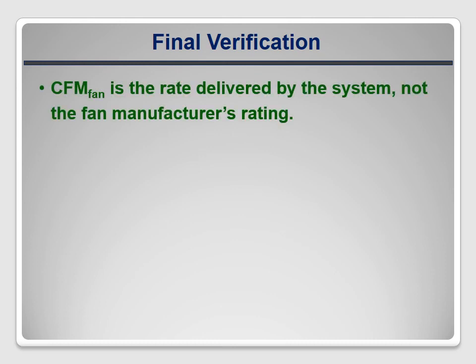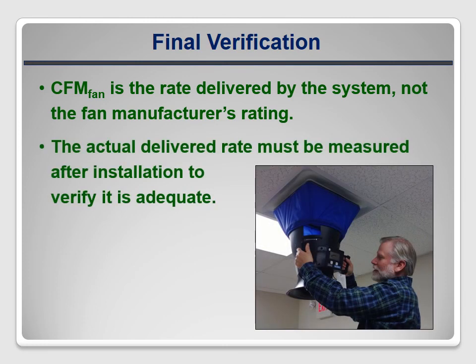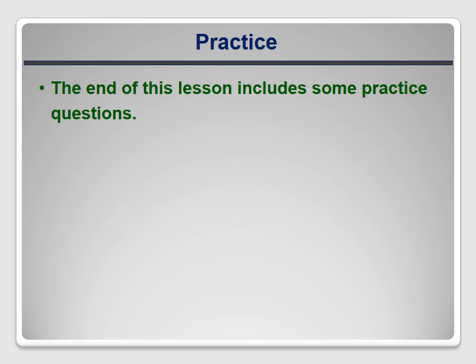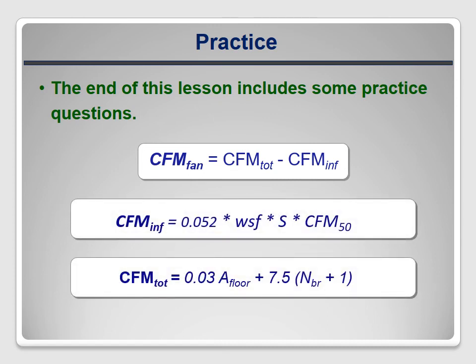ASHRAE 62.2 is very clear that the calculated ventilation rate applies to the final delivered ventilation rate of the installed system, not just the manufacturer's capacity rating for the fan. The flow rate of the installed system must be measured and demonstrated to be capable of meeting the ventilation requirement. To reinforce these calculation methods, we've included some practice questions in this lesson. You'll need to use these three formulas to complete them, and you'll also need them to complete the 10-question quiz at the end of the course.